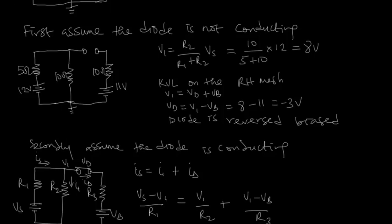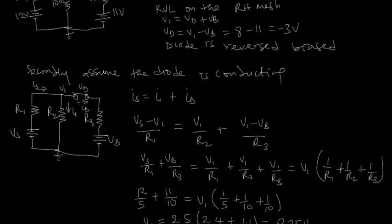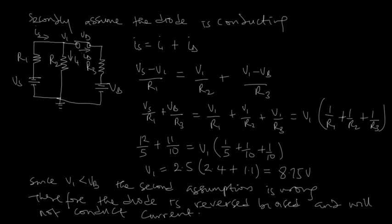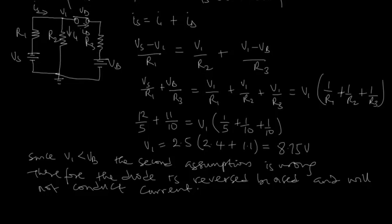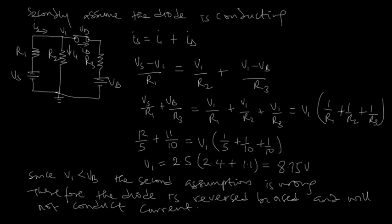And then we looked at the second assumption where the diode is conducting. And at the end, we also saw that from our analysis, the diode is reversed biased. It is not forward biased.